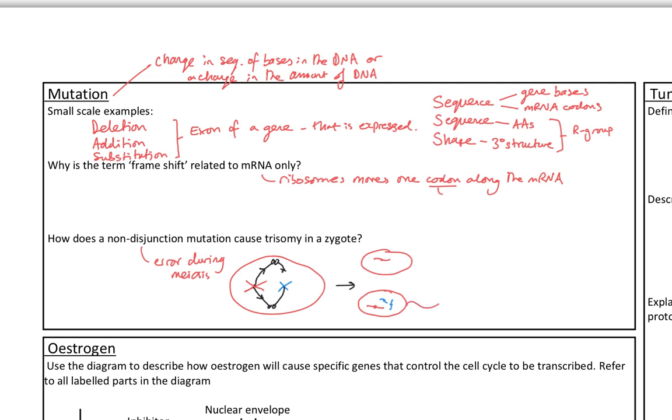So if this becomes a sperm cell and it fertilizes plus an egg cell and the egg cell is going to be normal. So it's got one red and one blue. That means that the zygote that we produce over here. So the fertilized cell is going to have two copies of the red, like it should do, one from each parent, and it's going to have three copies of the blue. And therefore, that's trisomy. And if that's chromosome 21, then that leads to Down syndrome.